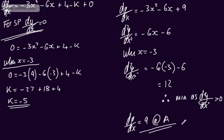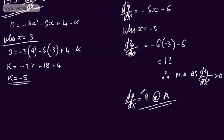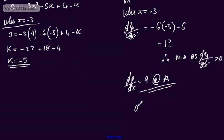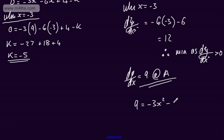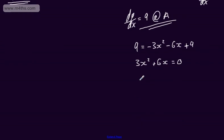All I'm going to do is set my gradient function dy by dx equal to 9. So we have 9 equals minus 3x squared, minus 6x, plus 9. The 9s cancel. Adding 3x squared and 6x to both sides gives 0. Factoring out 3x, we get 3x times x plus 2 equals 0. So this tells me that x equals 0 or x equals minus 2.